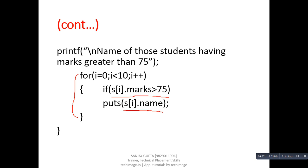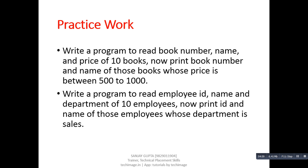So you can easily understand that if you want to store more than one piece of information of different data types, you can first declare a structure, then convert that structure variable into an array of structure, and with the help of a loop you can manage any number of records using only one variable.